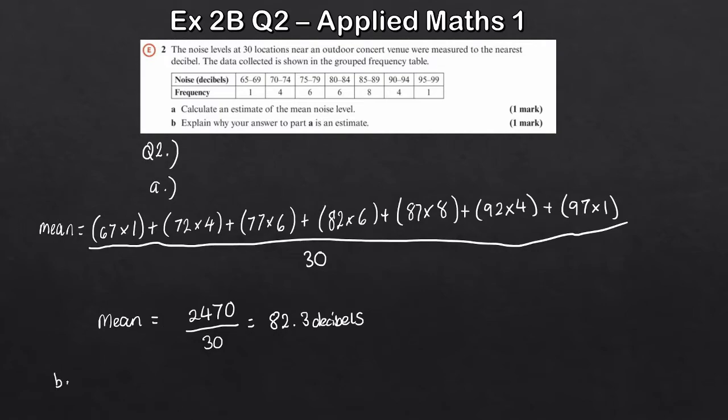And then for part B, it's just essentially one line. So why is this an estimate? Well, consider the fact that this is grouped frequency. We don't know exactly where that value kind of lies. So for that reason, we just take the midpoint. Because that's going to kind of give us the best, you know, the best estimate essentially. So it's an estimate as we don't know the exact data values. So that's simply all you've got to say there. One mark, one line sufficient. So a nice easy question to get us started.